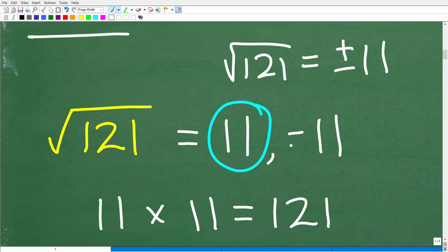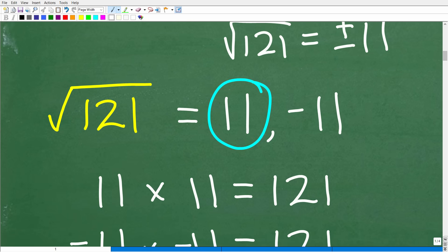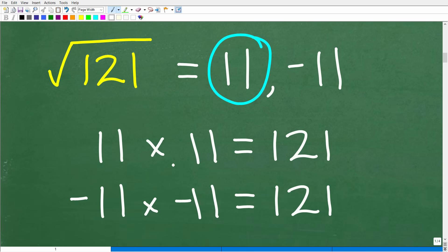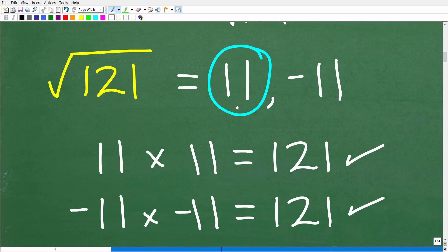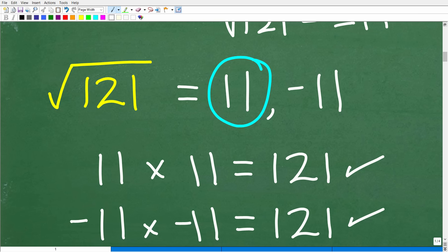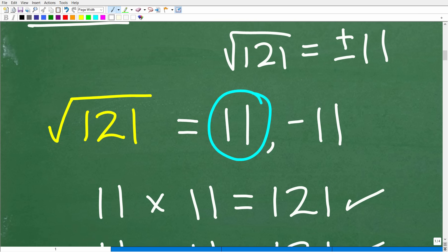So somebody might be saying, well, negative 11 works as well, because let's go ahead and take a look at this here real quick. 11 times 11 is 121. That's correct. And negative 11 times negative 11 is also positive 121. So, again, when we're finding the square root, we're looking for a number such that you multiply it by itself, you get back to that number. So why wouldn't negative 11 be an answer to this question? Well, again, when you're just asked in a question or, you know, a quiz exam, what's the square root of a number, just put the positive version down.